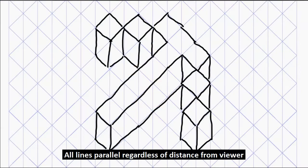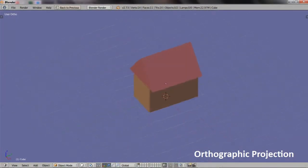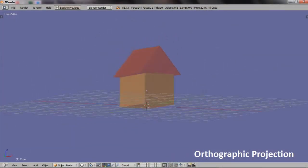Going back to the diagram on graph paper, that is actually not the case — all the lines are parallel no matter whether they're close to you or far back. In fact, you can see a similar effect in your 3D program. Just switch over to orthographic projection and it will basically keep all the parallel lines parallel.